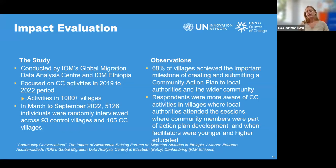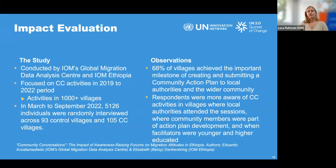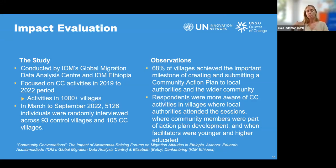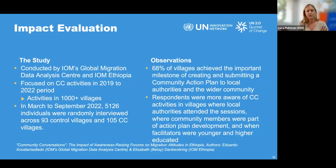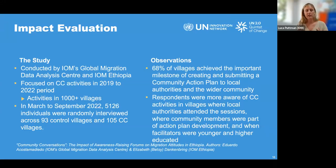IOM conducted an impact study through GMDAC — the Global Migration Data Analysis Centre — with a control group and an intervention group. Key findings: almost 70% of villages with community conversations were fully capable of producing a community action plan submitted to government independently of IOM. The study also showed that effectiveness was greater when government authorities actively participated, when communities were actively engaged in planning, and when facilitators were younger and more educated.